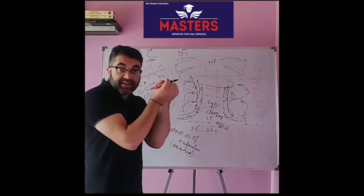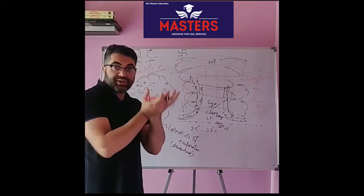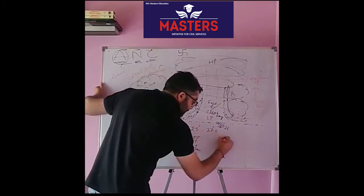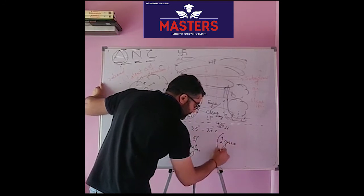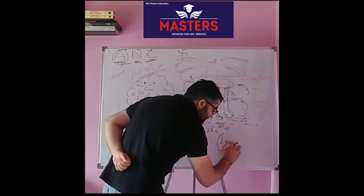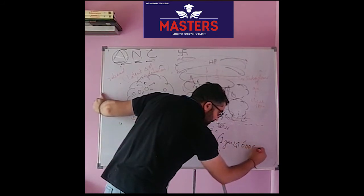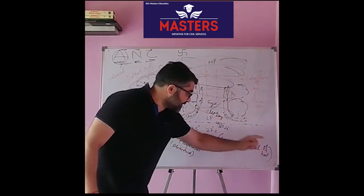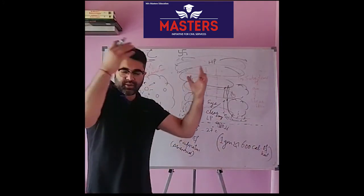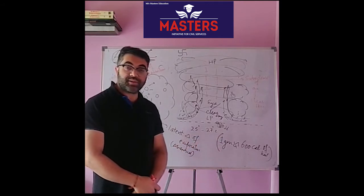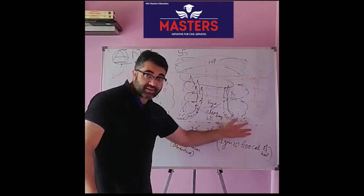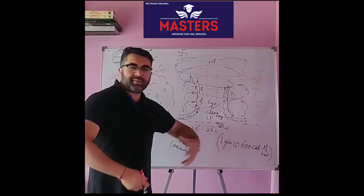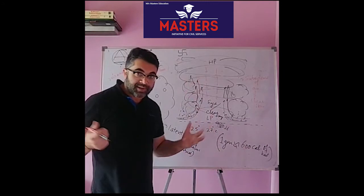When water vapors rise up, they condense and release that heat — the latent heat of condensation. One gram of water vapor releases approximately 600 calories of heat. There is so much water vapor present in a cyclone, and so much condensation takes place, that the energy released is enormous — it is an explosion of energy.